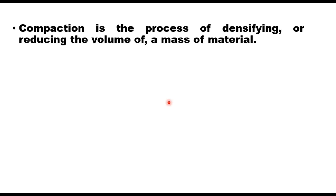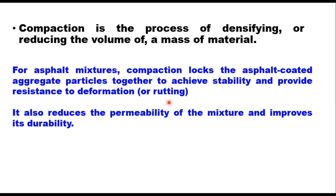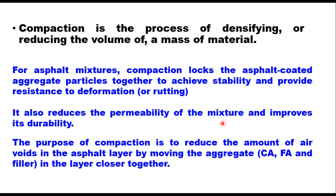Compaction is the process of densifying or reducing the volume of a mass of material. For asphalt mixtures, compaction locks the asphalt-coated aggregate particles together to achieve stability and provide resistance to deformation, i.e. rutting. It also reduces the permeability of the mixture and improves its durability. The purpose of compaction is to reduce the amount of air voids in the asphalt layer by moving the aggregate — coarse aggregate, fine aggregate, and filler — in the layer closer together.